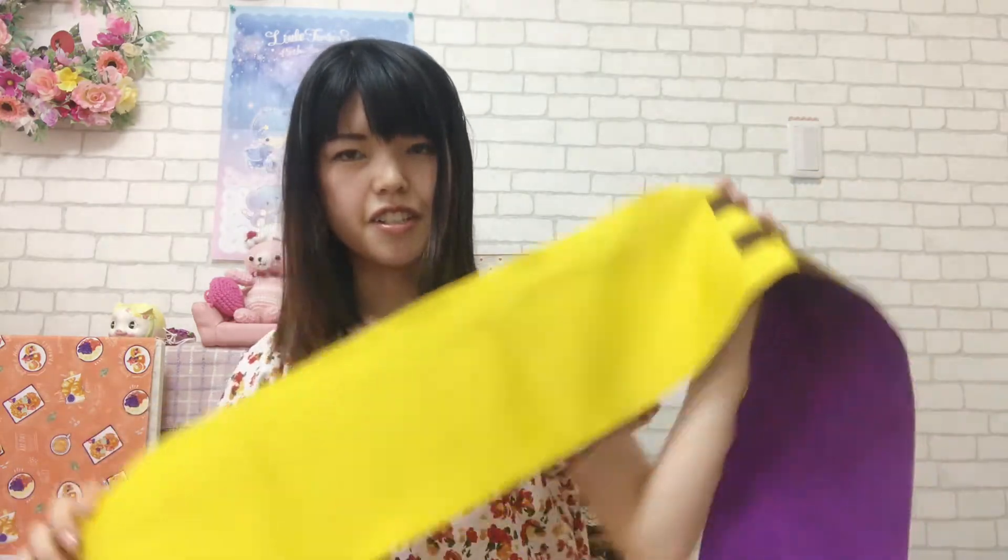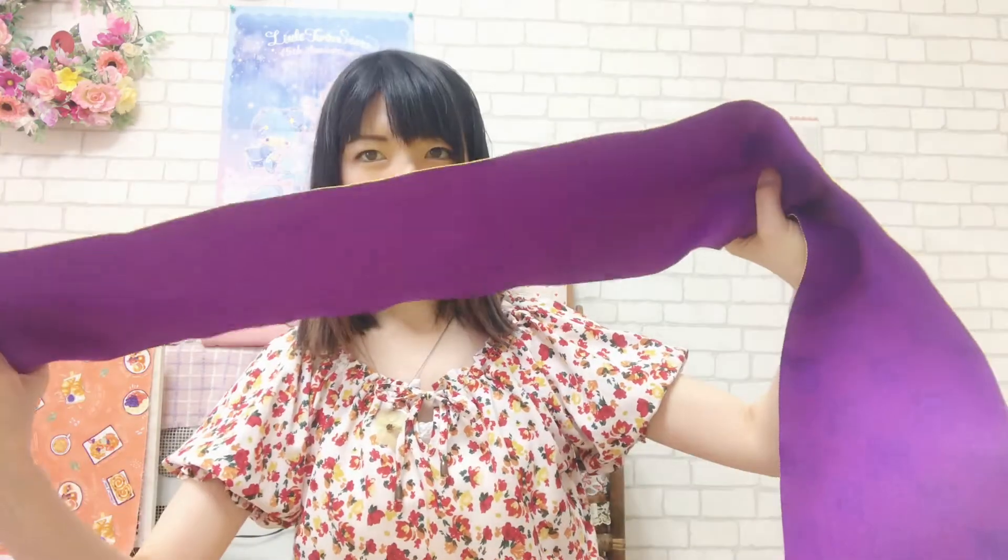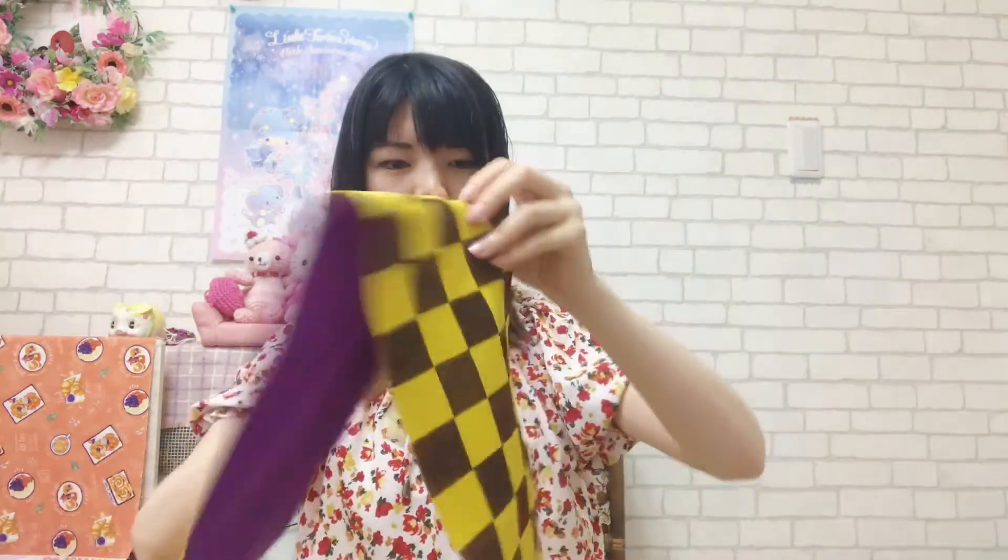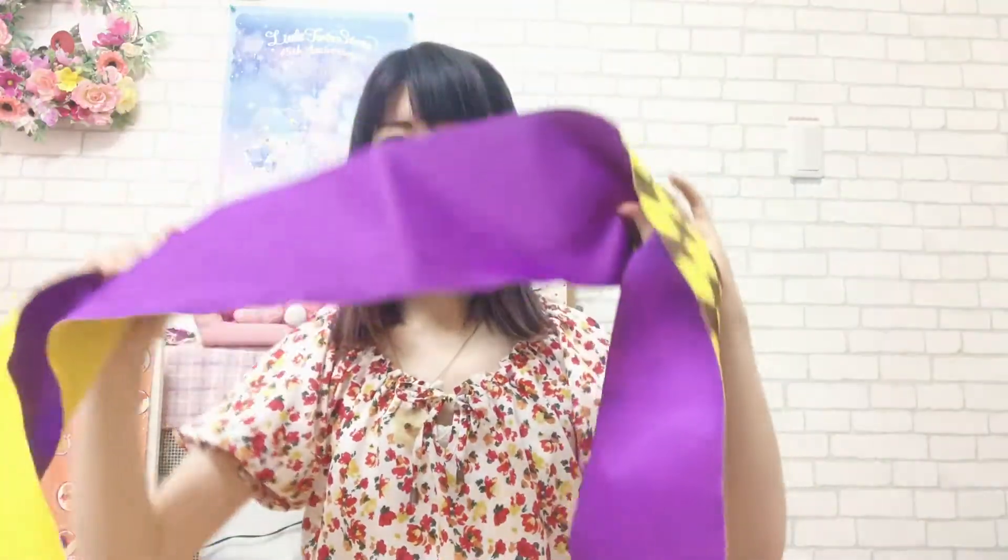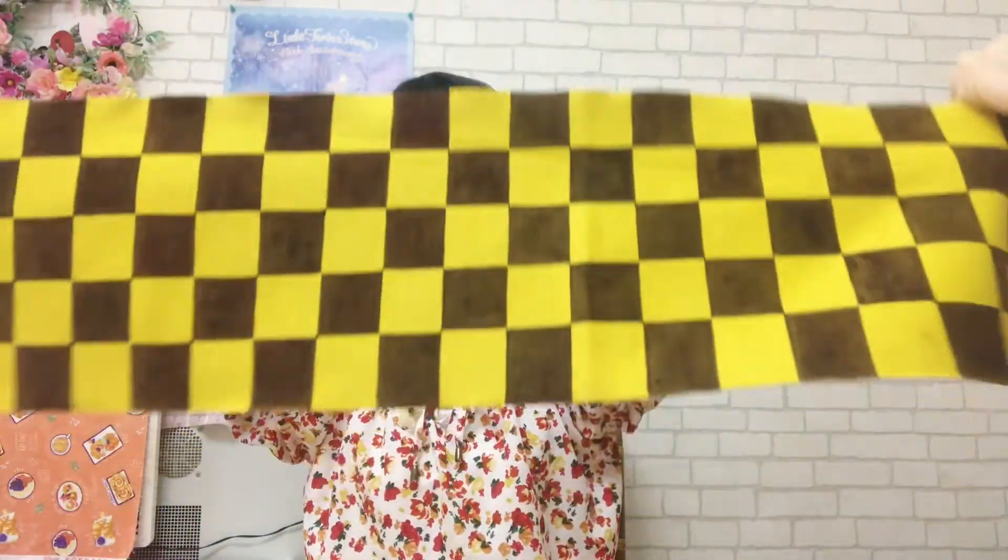This was originally yellow and purple two ways Obi, but with this yellow and purple and check, I made it three ways. You can paint Obi with acrylic colors or something, but please avoid the part which touches your skin, because this is not for clothes. But it's okay for using Obi.